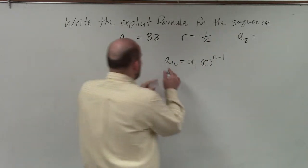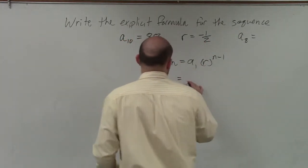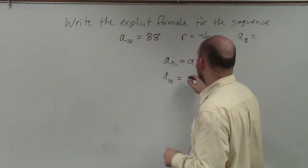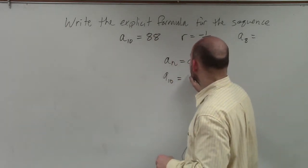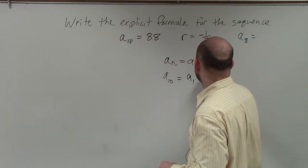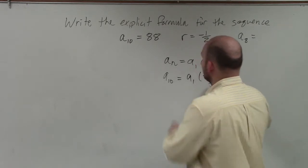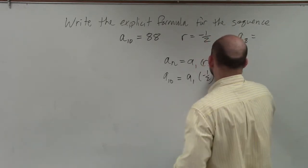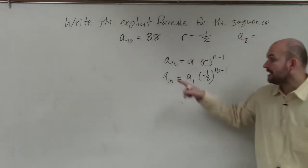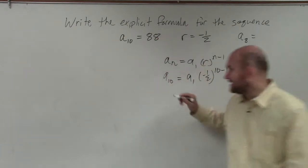So I know a_sub_10. I know what a_sub_10 is; I do not know what a_sub_1 is. I know the rate, which is negative one-half. And n is going to be 10 minus 1. Do I know what a_sub_10 is? Yeah, it's 88.